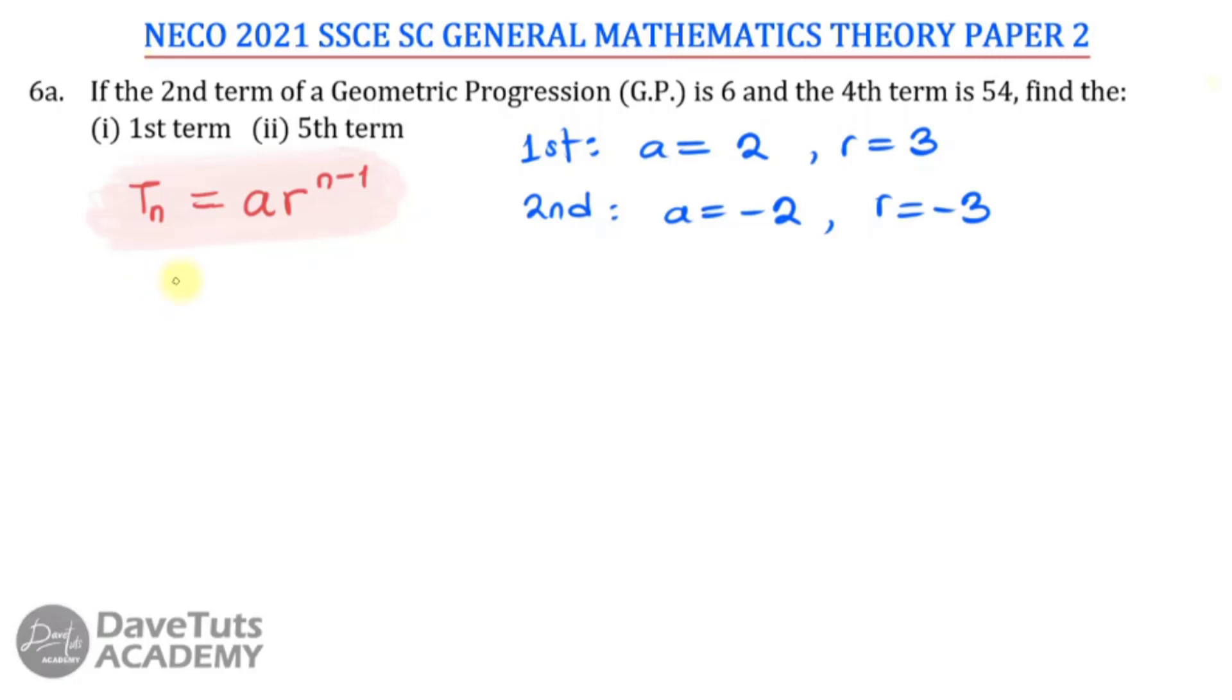And then in this second question, in which we are also being asked that we are to find the fifth term T5. T5 is A R to the 5 minus 1, which is AR raised to power 4. So for the first case, we can say T5 is equal to A, A is 2, multiplied by R, R is 3 raised to power 4. So this would be 2 times 81, and that would be 162.